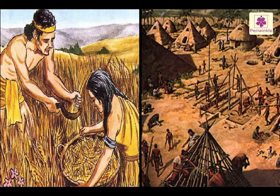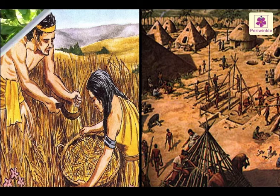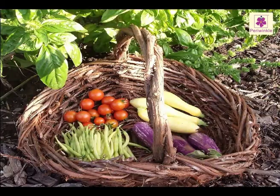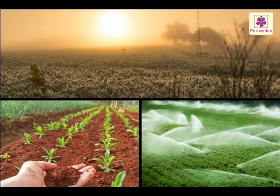Later, he learned to grow food. From then on, he started leading a more settled life. Although man has learned to grow food, he depends on the natural environment for the food he grows.